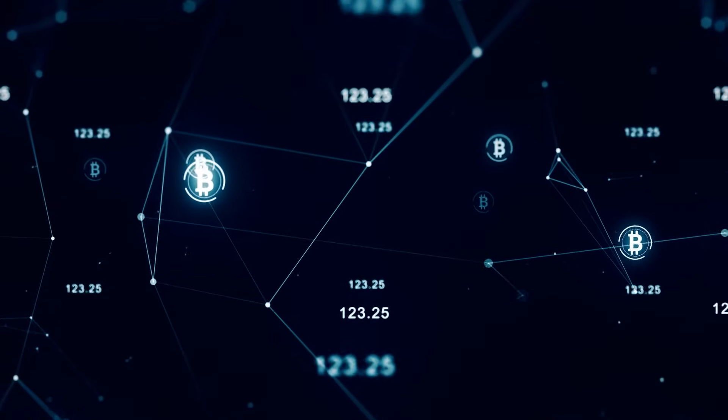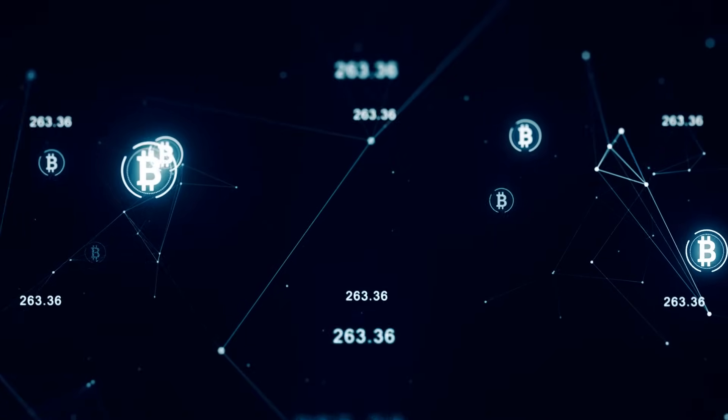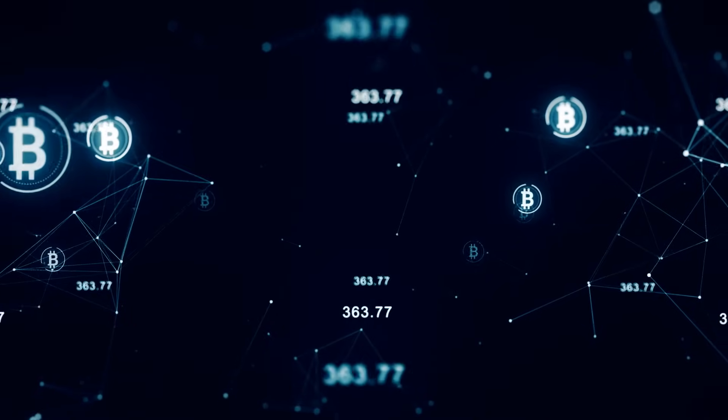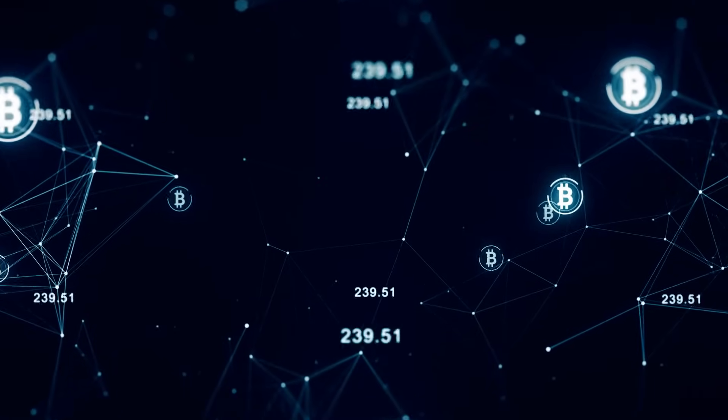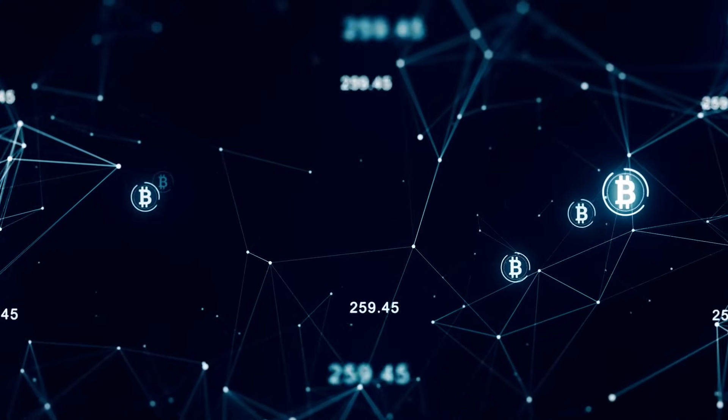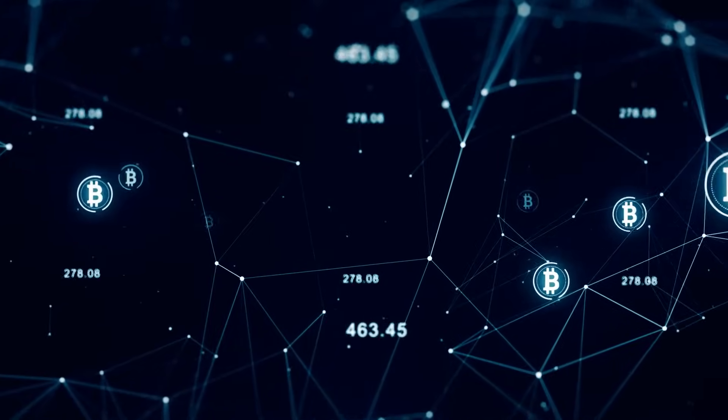You can get tokens by logging OBT tokens worth 30% of your initial investment, thanks to cloud mining and UB accounting.